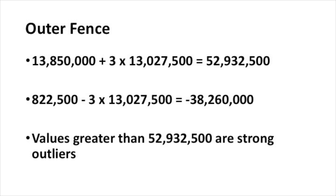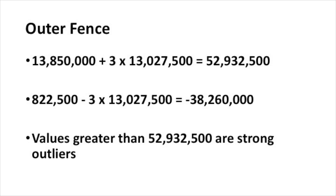To calculate the outer fences, you take the third quartile, which is 13.85 million followers, and add to that three times the interquartile range. That gives us an outer fence of just under 53 million followers. So if a celebrity has more than that number of followers, they would be a strong outlier. For the other outer fence, you take the first quartile — about 822,000 followers — and subtract three times the interquartile range, which gives a value of minus 38 million followers. Of course, the smallest number of followers you could have is zero, so there won't be any strong outliers on the low end.